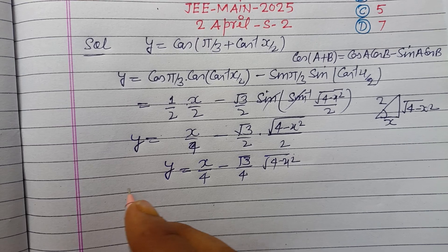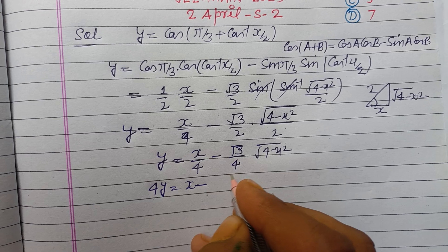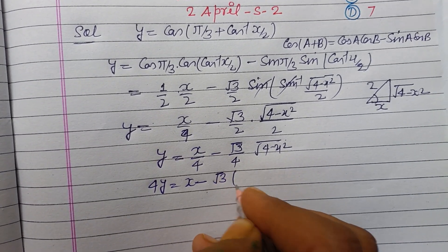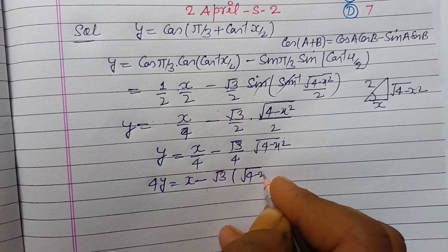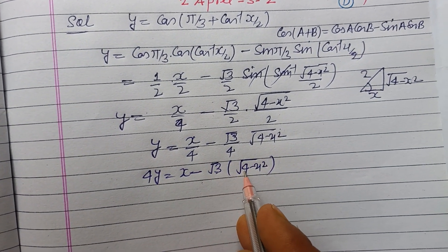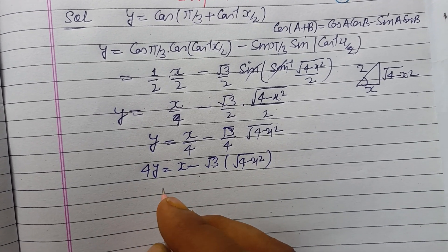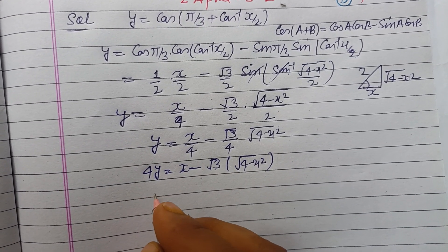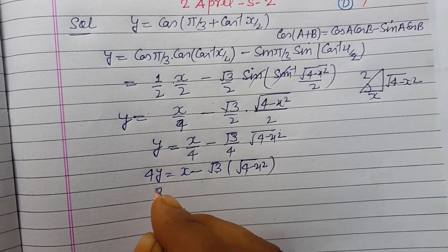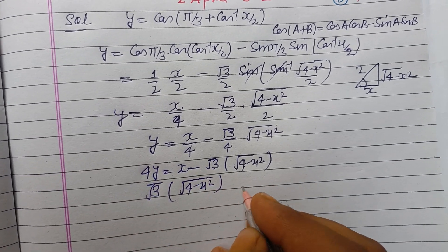So x/4 minus root 3 over 4 times root (4 - x square). Bringing root (4 - x square) to one side equals x minus 4y.